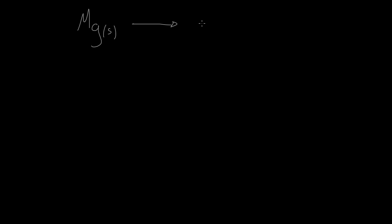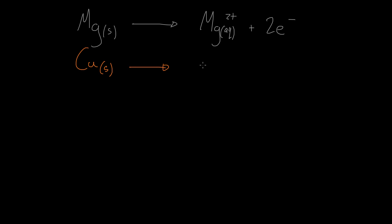So let's start with two reactions. Magnesium reacts to form its 2+ ion and two electrons — this is in aqueous solution. And copper doing the exact same thing: copper will form its 2+ ion in solution and two electrons.